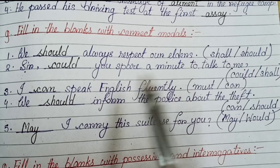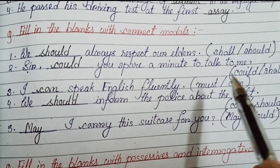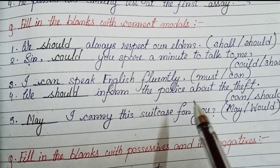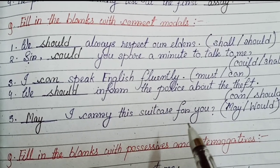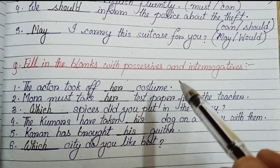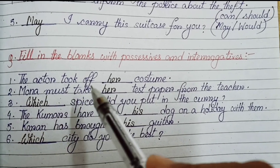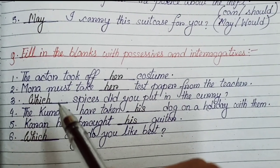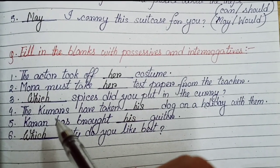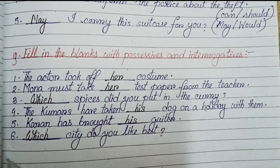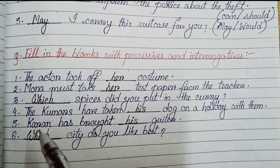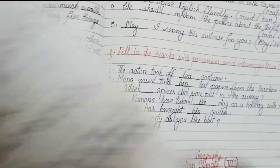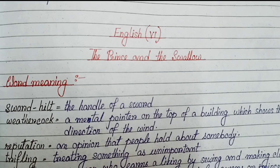Number five: He passed his driving test at the first assay. Fill in the blanks with the correct modals. Number one: We should always respect our elders. Number two: Sir, could you spare some time to talk to me? Number three: I can speak English fluently. Number four: We should inform the police about the theft. Number five: May I carry this suitcase for you? Fill in the blanks with possessives and interrogatives. Number one: The actor took off her costume. Number two: Mona must take her test paper from the teacher. Number three: Which spices did you put in the curry? Number four: The Kumars have taken their dog on a holiday with them. Number five: Karan has brought his guitar. Number six: Which city do you like best?